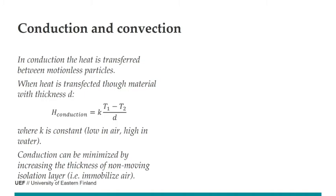Conduction also depends on the thickness of the insulating layer. Animals exploit this: if there is a non-moving insulating layer of air, air is a very good insulator. That is why arctic animals are furry — they minimize conduction by increasing the thickness of the layer where air is not moving. Similarly, a good winter coat for arctic conditions has a thick layer with air trapped inside it.